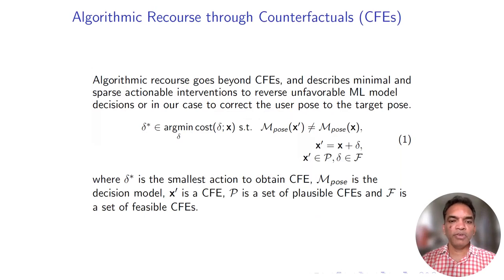Here we use counterfactual explanations. These are example-based explanations, and our goal is to reverse an unfavorable decision by a pre-trained classifier. In this case, this is the pose classifier that classifies a given pose as a reverse warrior pose or not, or some other pose. Using algorithmic recourse, we do actionable recommendations, and we know in algorithmic recourse it is important that our actions come from the feasibility set.